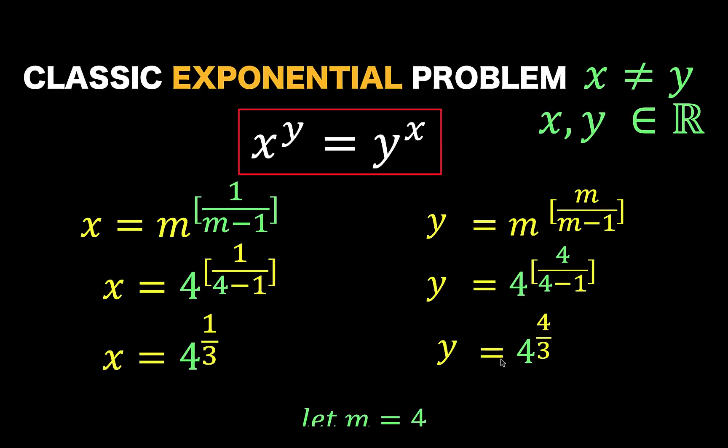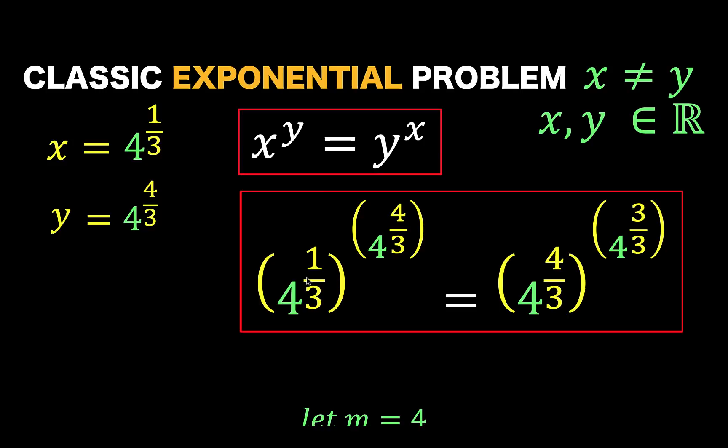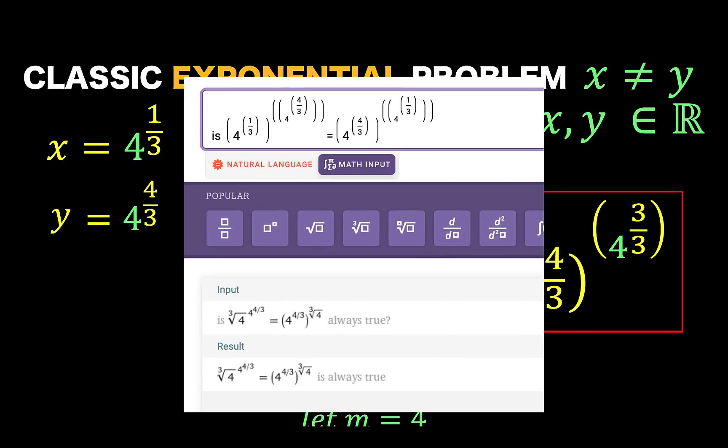Now, substituting these two values, one for x and one for y, into the original equation, we now have this result. And we would like to check if we arrive at a true statement here. So, let's get some help from Wolfram Alpha.